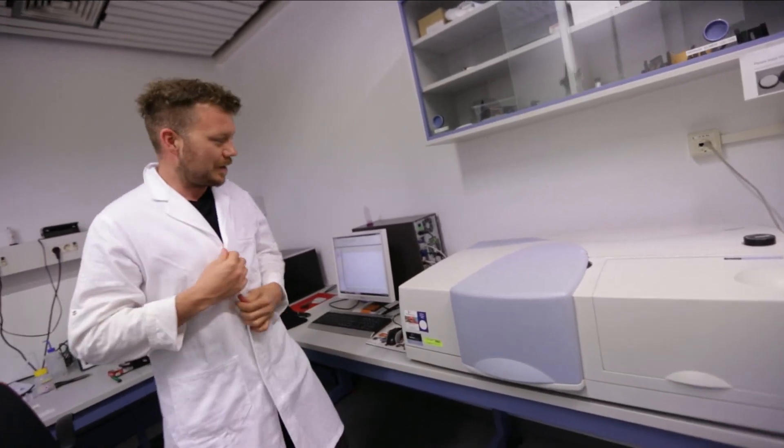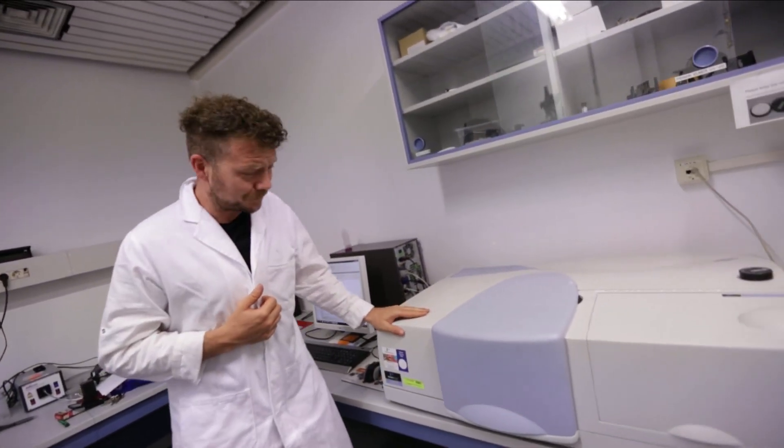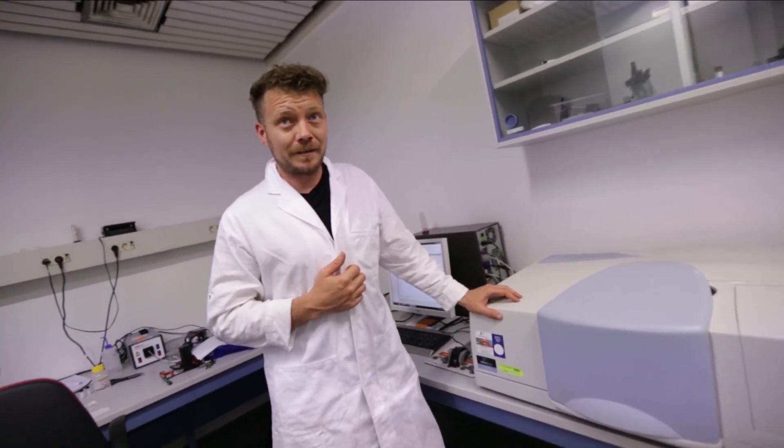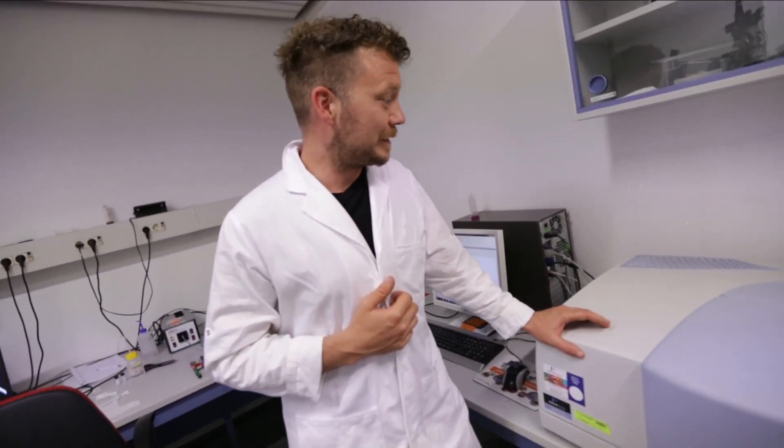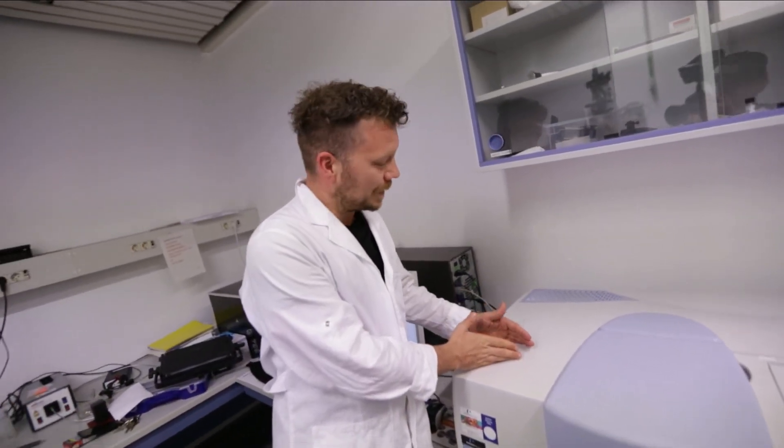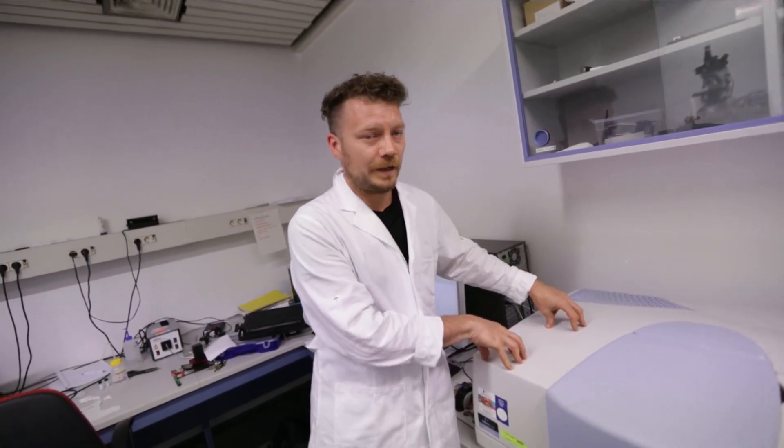All right, so we are at a VIS spectrometer at the moment. This is a machine that measures light and light reflection specifically, but it does not only measure the visual part of the light but also the infrared and the ultraviolet part.